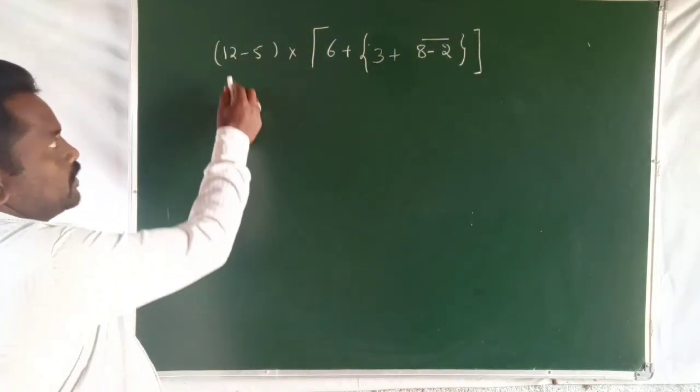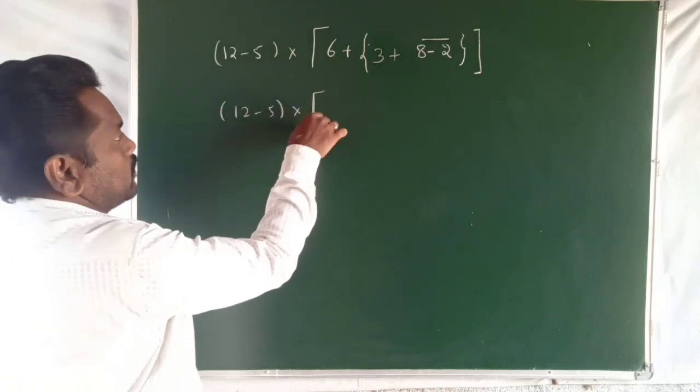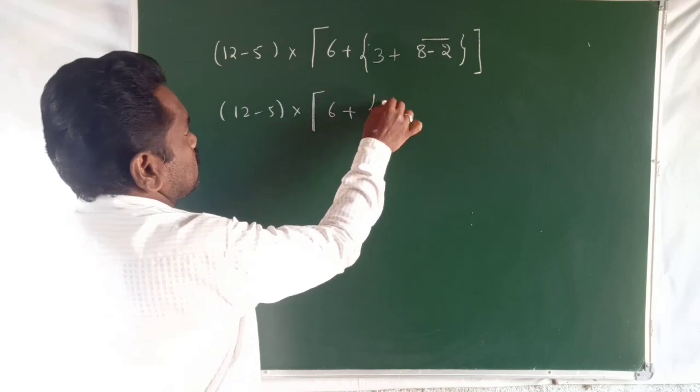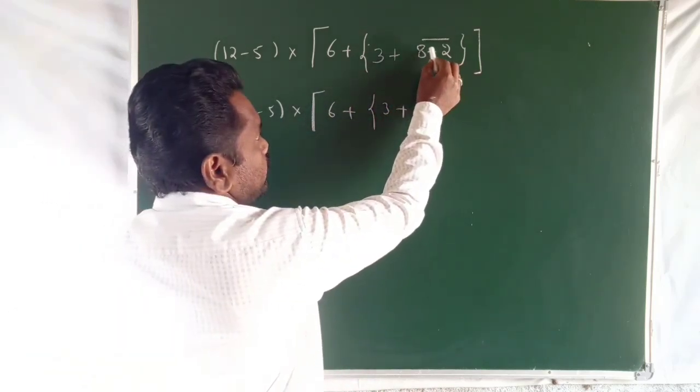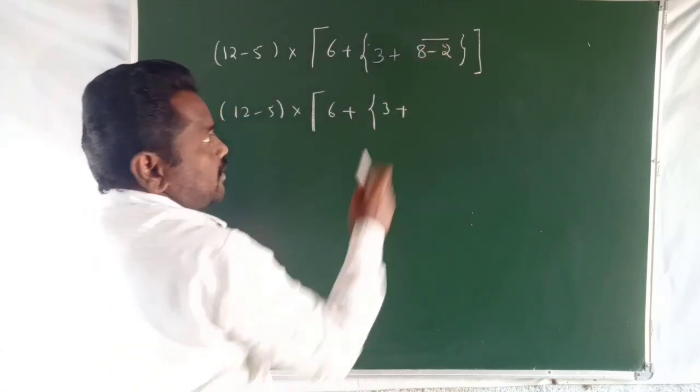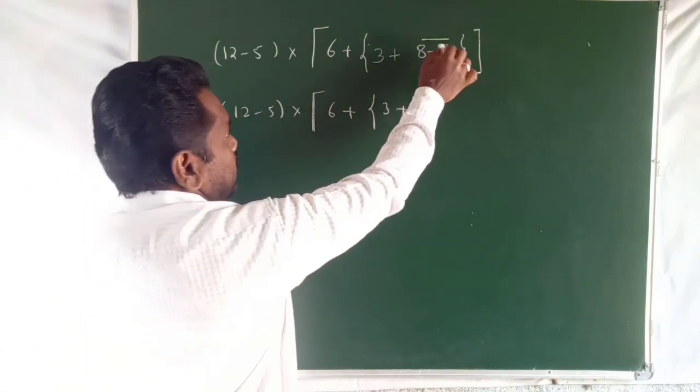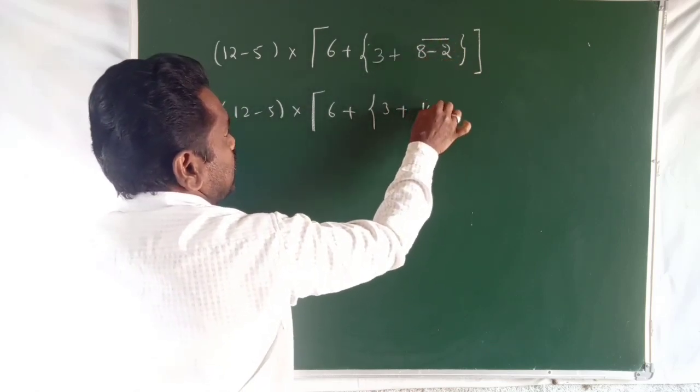This is another type. So 12 minus 5, 6 plus 12 plus 3 plus, this is the bar, means which one is positive or negative. And that time 8 minus bar, that is 8 plus 2 equals 10.